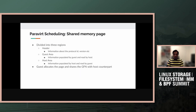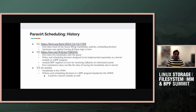On the shared memory page we have basically three areas: a header, a guest area where the guest populates and the host reads, and a host area where the host populates and the guest reads. The current design is where the guest allocates one page or one block of memory per vCPU, and the host reads that to understand the details.